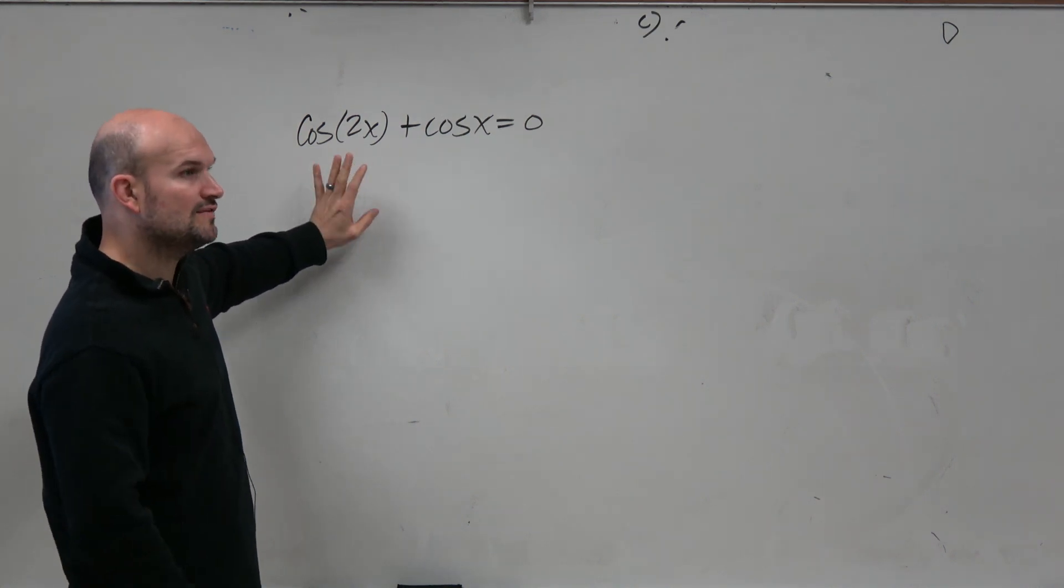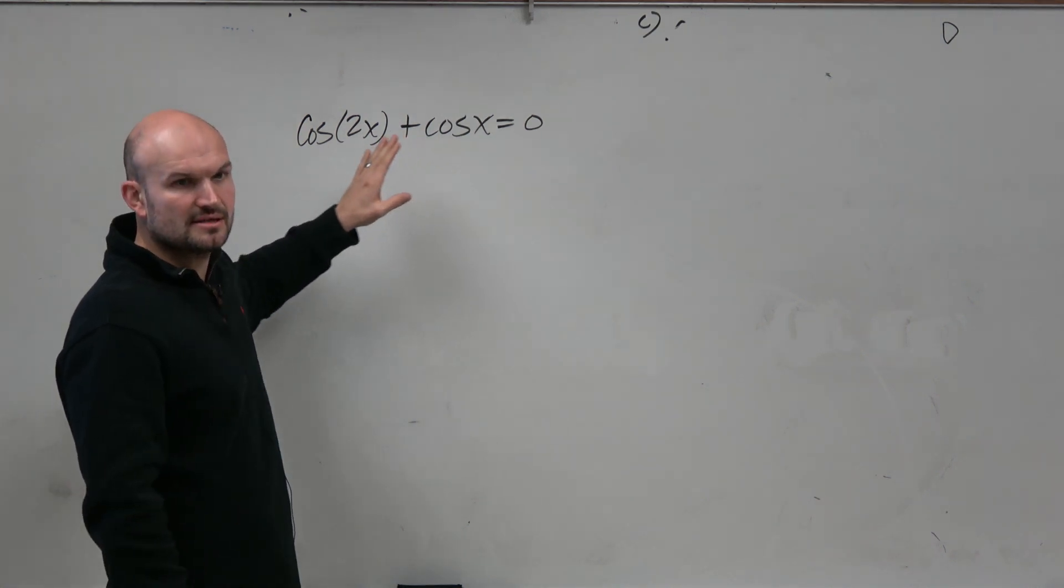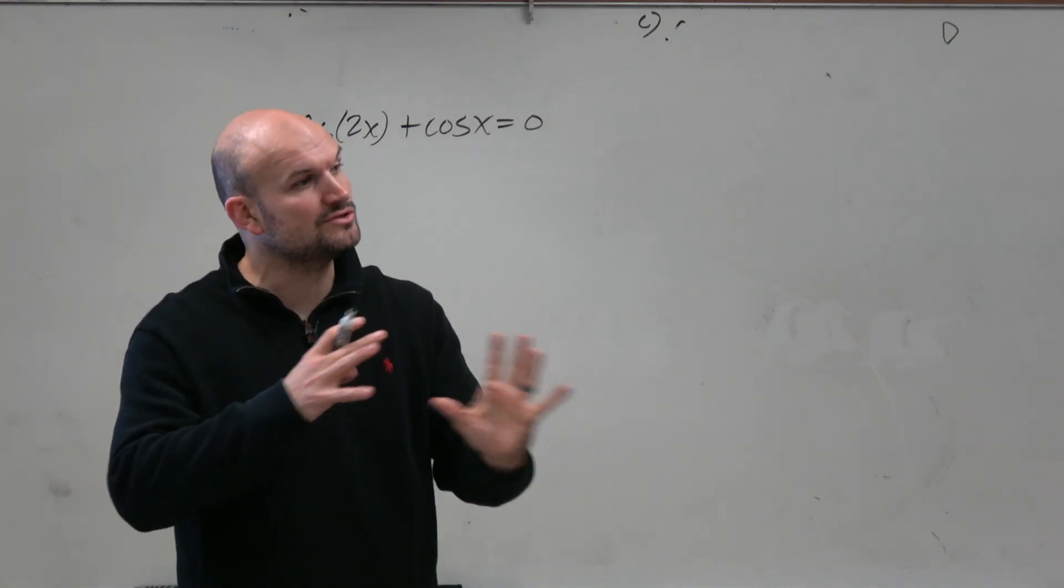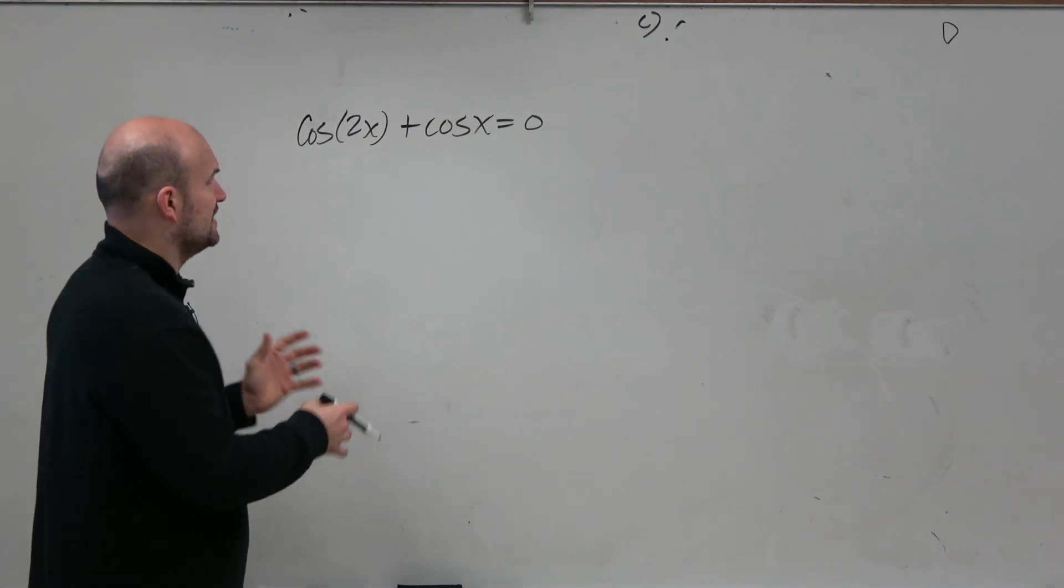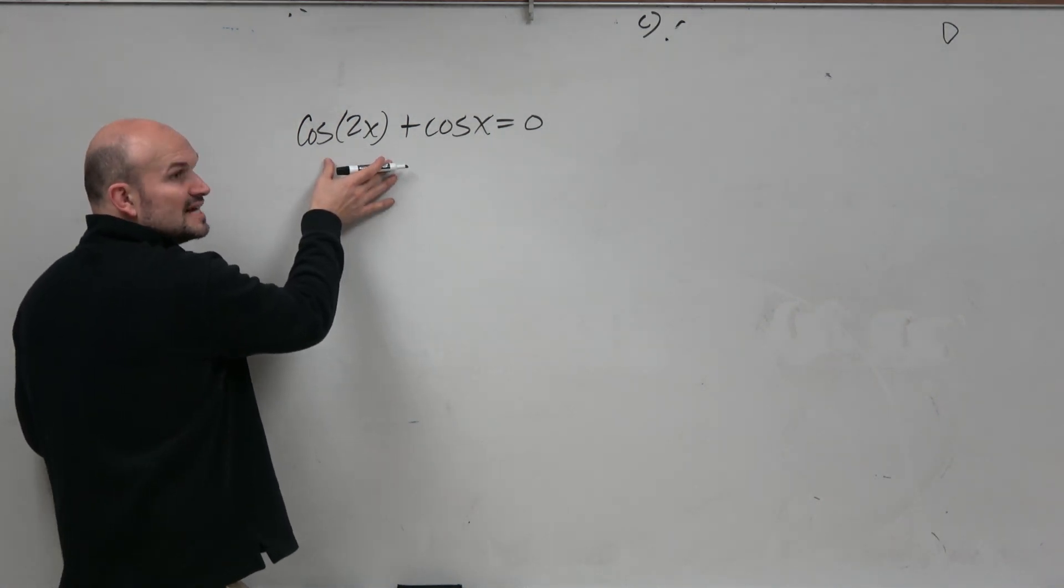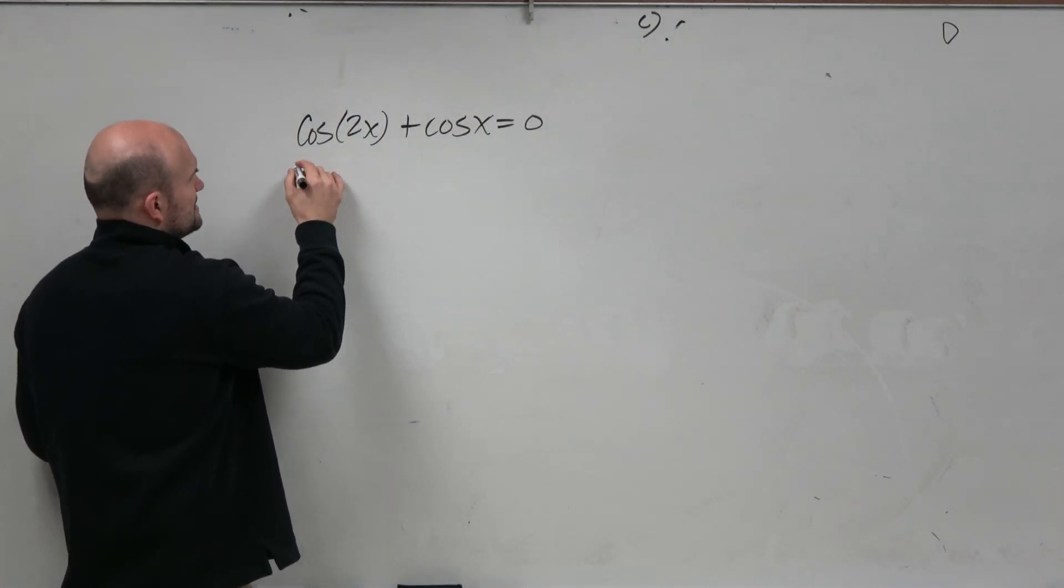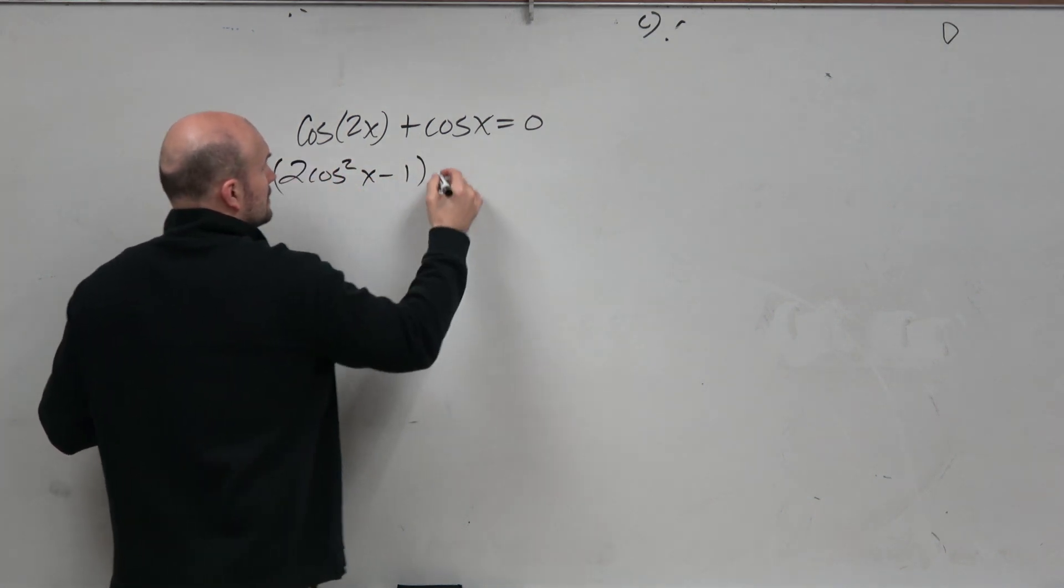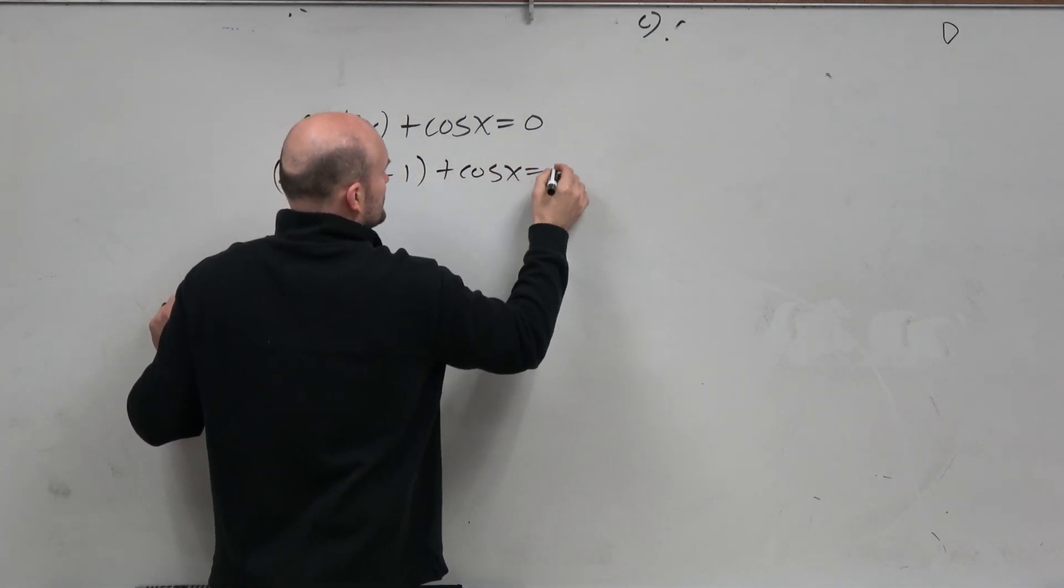Piece of advice: typically when you're solving, you want to keep things in terms of sines and cosines. Sometimes there are equations where we do solve with tangent, but typically we want everything in terms of sines or cosines. Therefore, this is 2cos²x - 1 + cosx = 0.